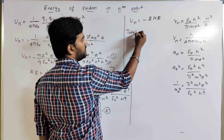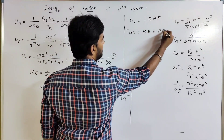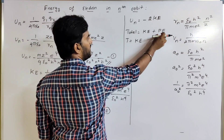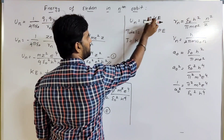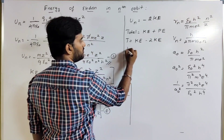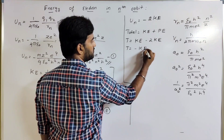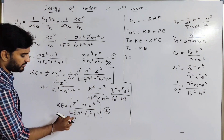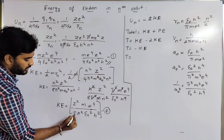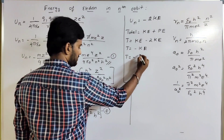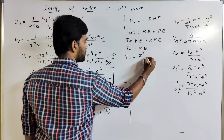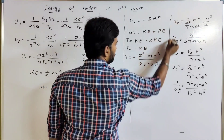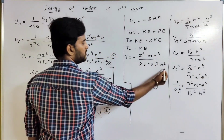Total energy equals kinetic energy plus potential energy. So total energy T equals KE plus Un, which equals KE plus (-2KE), giving KE minus 2KE equals minus KE. Therefore the total energy equals minus KE, which is minus Z squared m e to the power 4 divided by 8 ε₀ squared n squared h squared.